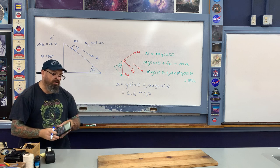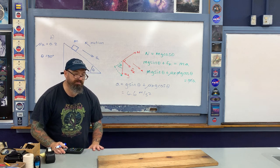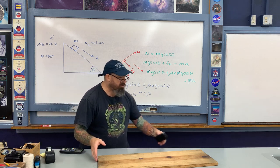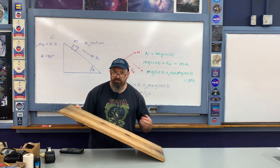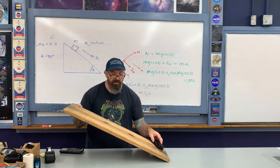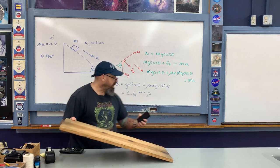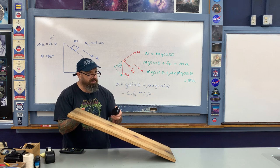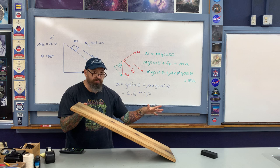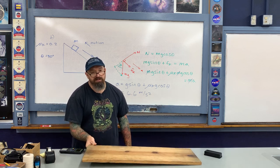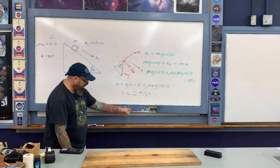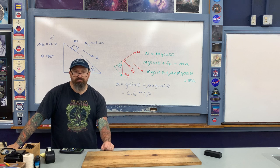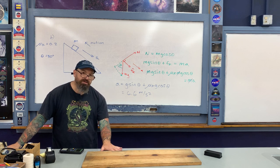The result can only be a positive number, confirming the eraser must slow down. In the frictionless case, the friction term disappears, recovering Galileo's freefall result. Plugging in: g sine 30 plus 0.2 times 9.8 times cosine 30 gives approximately 6.6 meters per second squared. The eraser slows down faster in part B than it speeds up in part A — a difference you can observe directly. With a little practice, kinetic friction is straightforward. Next, we'll move on to static friction.